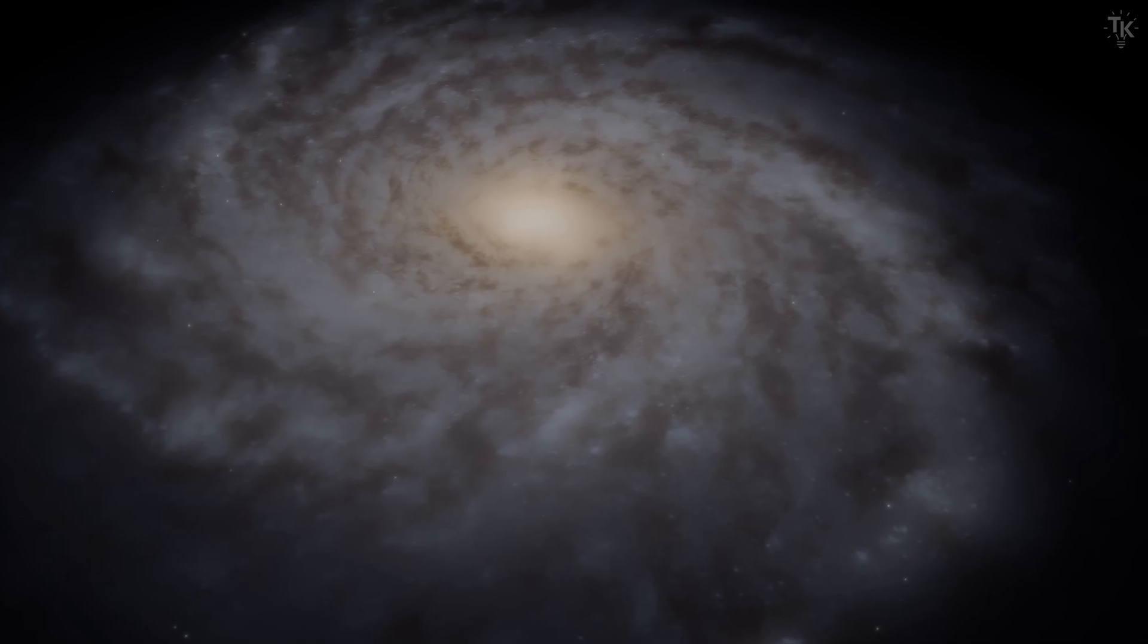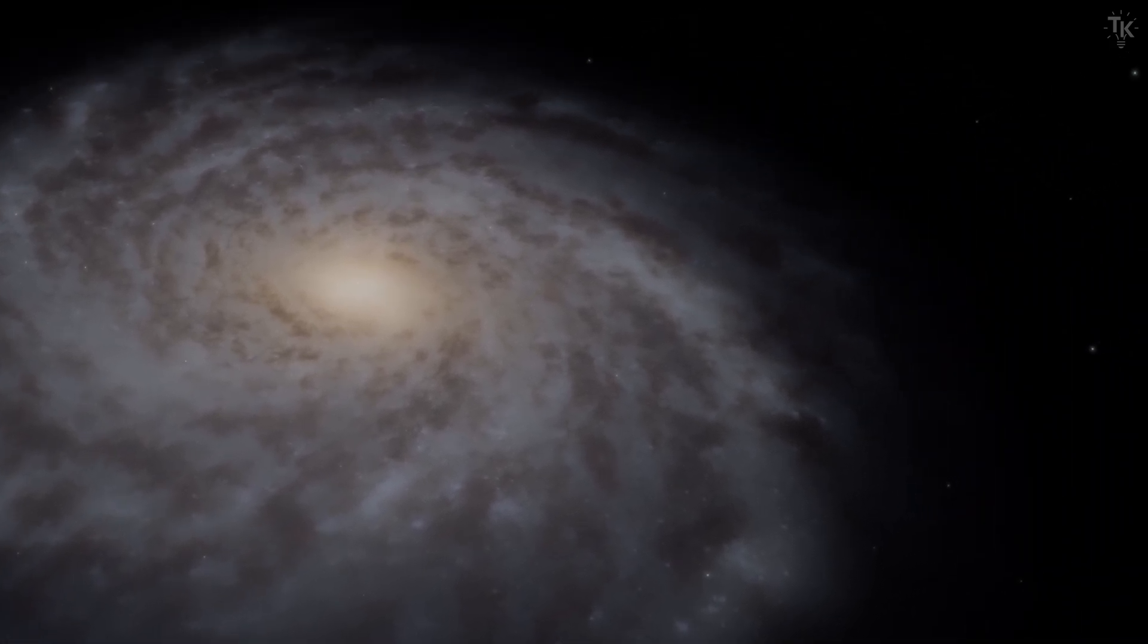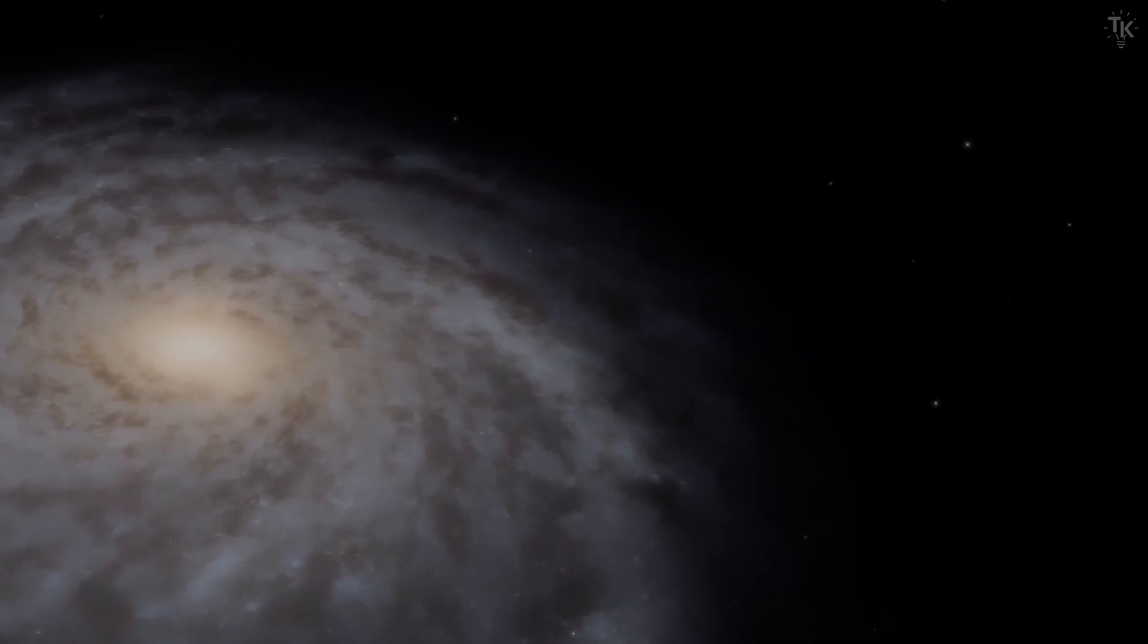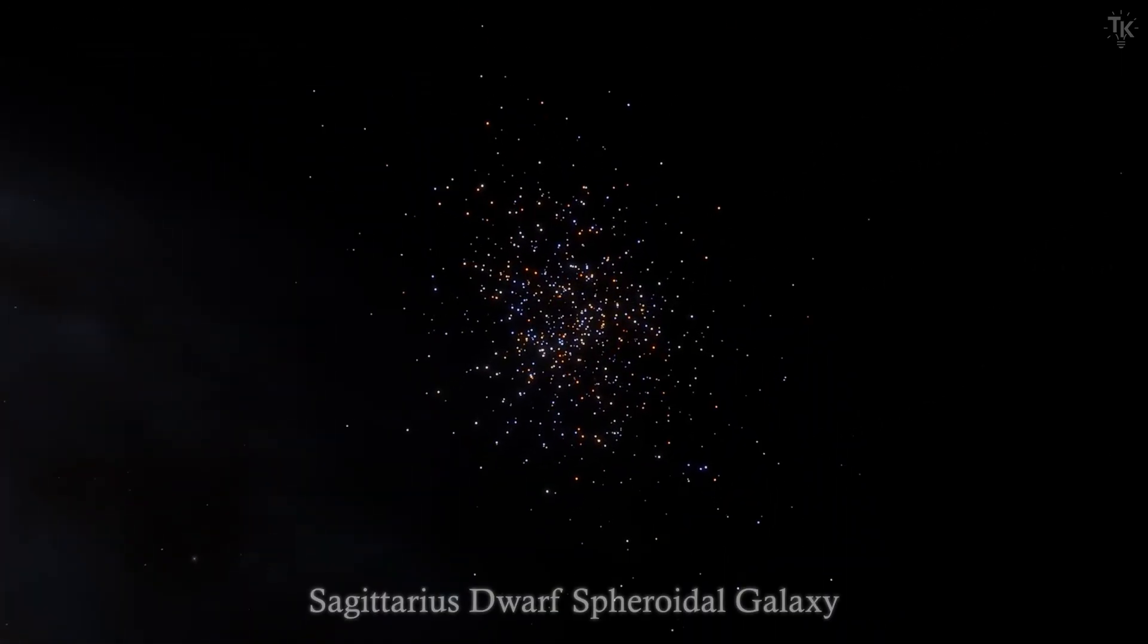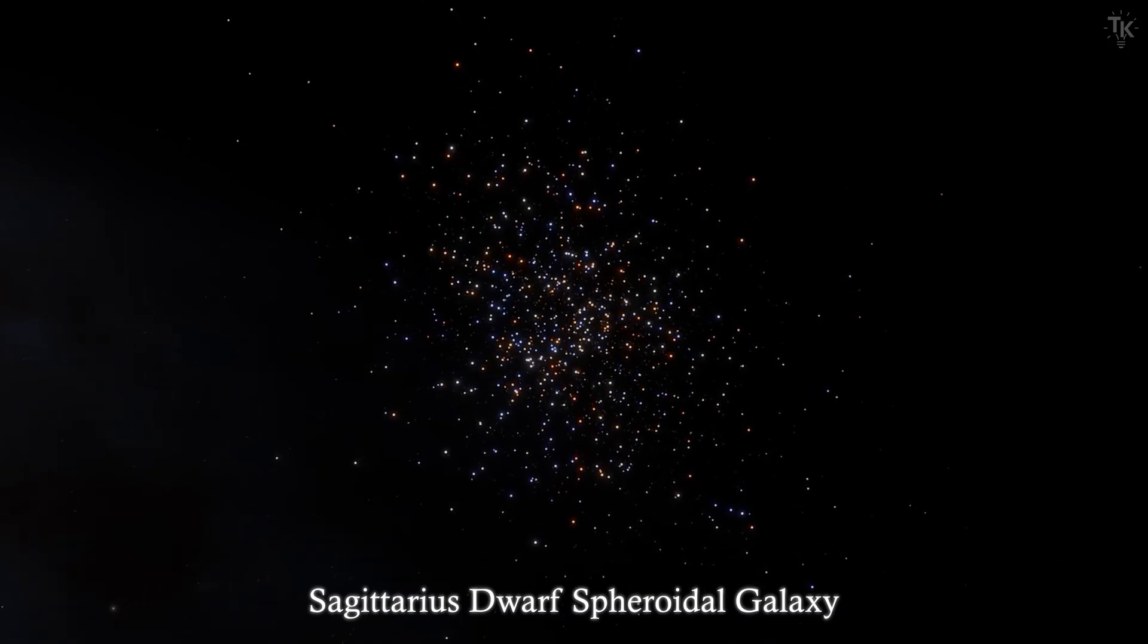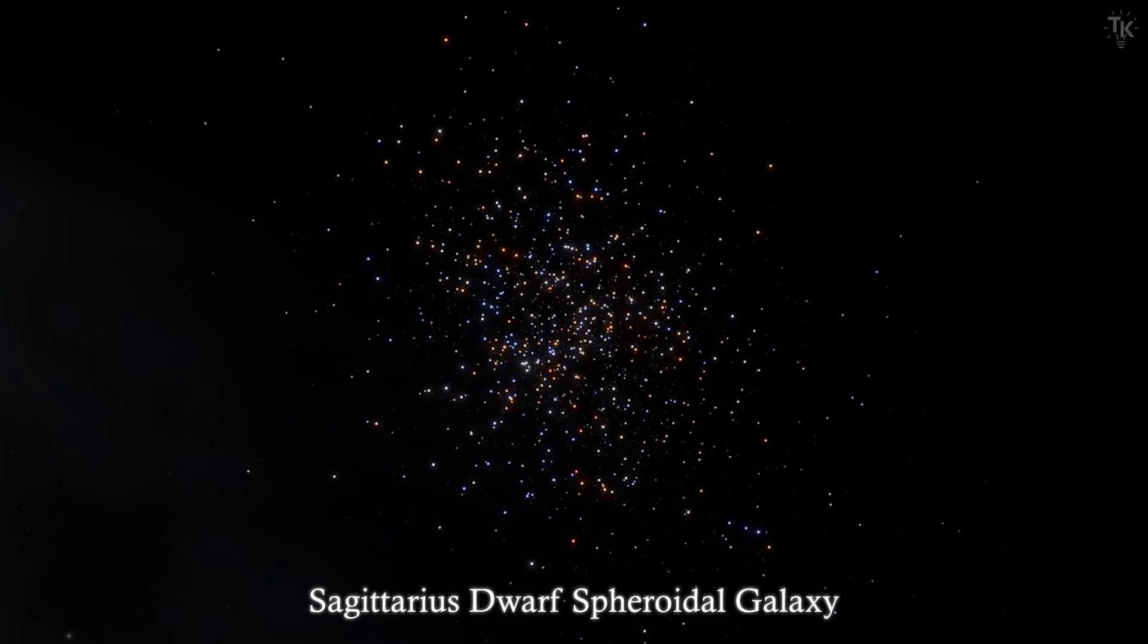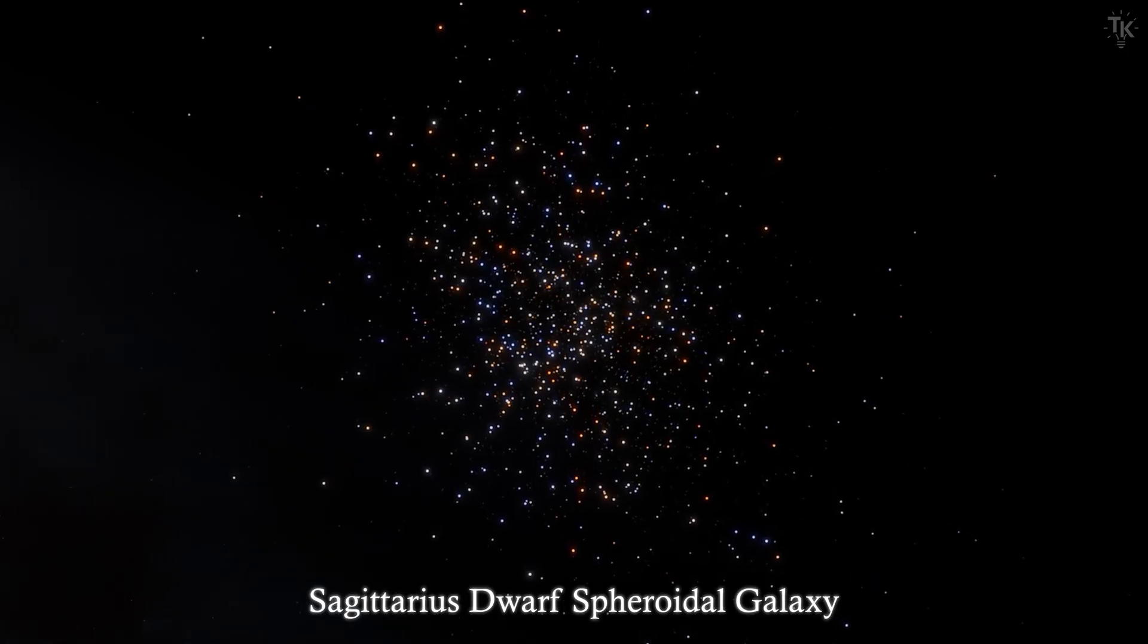The Milky Way, shaped by repeated collisions, does not only bear traces of ancient encounters. Even today, it is in the middle of another collision. The galaxy currently colliding with it is the Sagittarius Dwarf Spheroidal Galaxy. It lies about 70,000 light-years from Earth, with a diameter of about 10,000 light-years, only about one-tenth the size of the Milky Way.